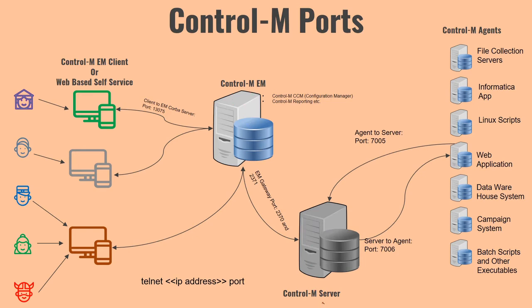Control-M EM and Control-M Server interact with each other using EM Gateway services. The EM Gateway service uses port 2370 and 2371. Control-M Server listens on port 2370 for communication from Control-M EM, and then Control-M Server opens another service listening on port 2371. You should have both of these ports open between Control-M EM and Control-M Server.